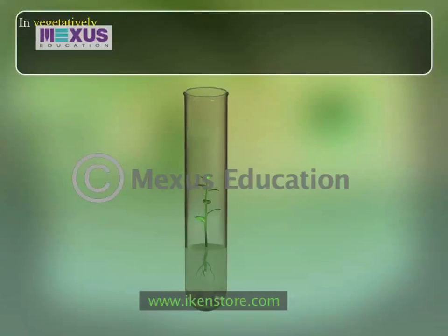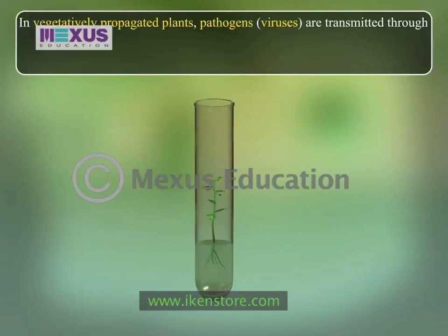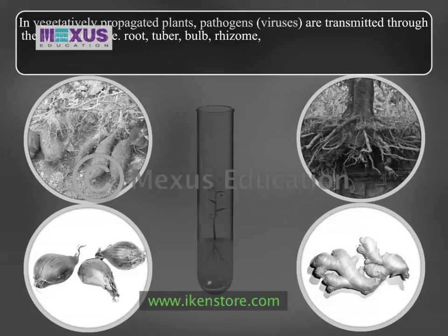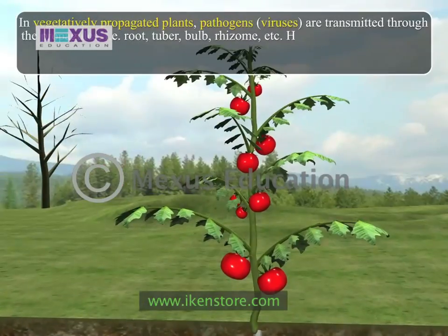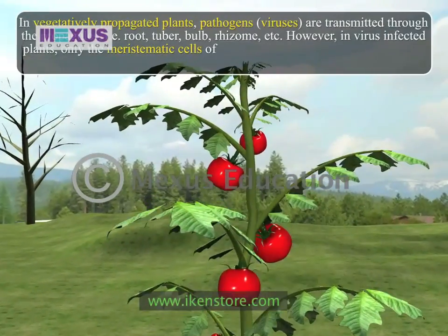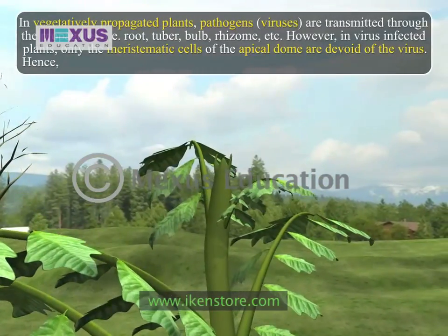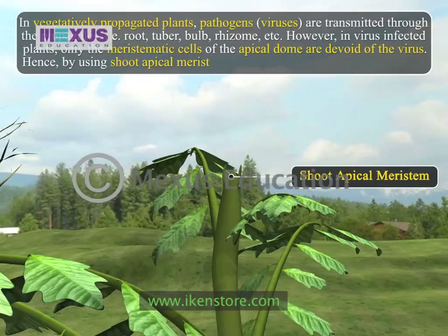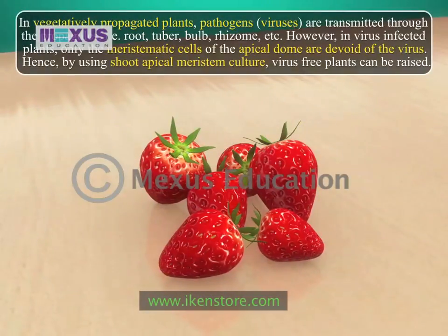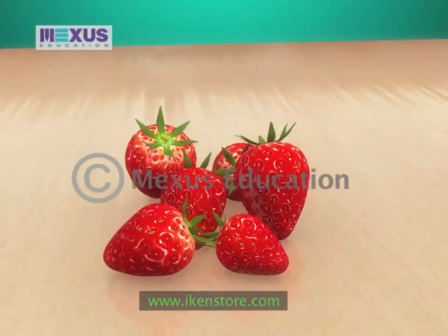5. In vegetatively propagated plants, pathogens and viruses are transmitted through the propagules — that is root, tuber, bulb, rhizome, etc. However, in virus-infected plants, only the meristematic cells of the apical dome are devoid of the virus. By using shoot apical meristem culture, virus-free plants can be raised. Notable examples are disease-free strawberries, potatoes, etc.